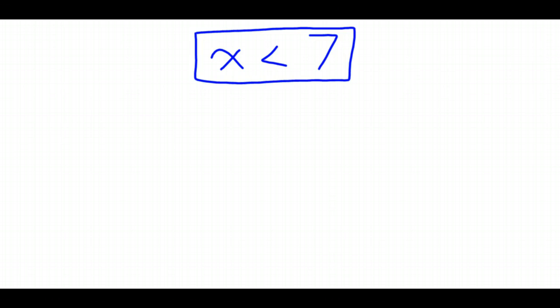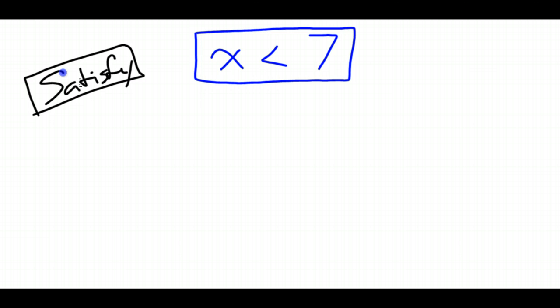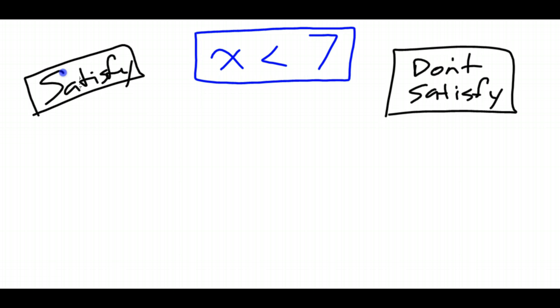Coming from the last video lesson on the introduction and basic solving ideas behind inequalities, we have to start assuming that we can give examples of numbers that are less than 7 — that satisfy the inequality — and numbers that are not less than 7, which don't satisfy the inequality, meaning they don't make it true. Go ahead and pause the video and come up with a few numbers that fit each category, just as a brief review.